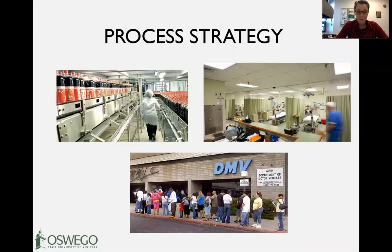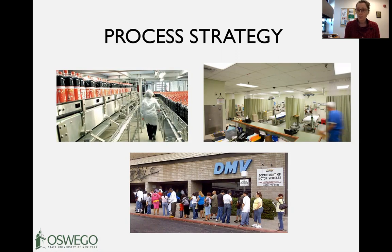Hi everybody, welcome to week seven. Last week we talked about quality and statistical process control, but this week we're going to take another step back to think more fundamentally about the processes, technology, and equipment we use — whether that's the right equipment, the right technology, or the right process — and how we think about changing those processes to better support growth, increased capacity, quality requirements, cost requirements, and customer needs for flexibility.